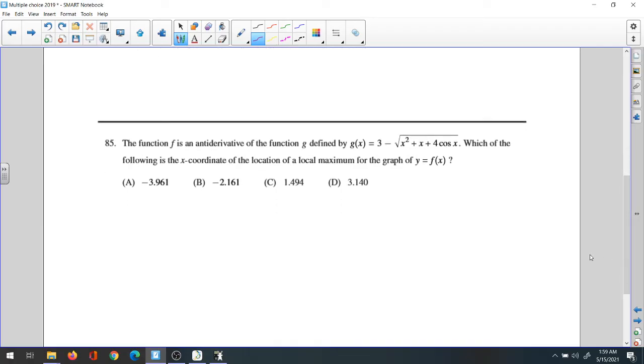Question 85: The function f is the derivative of function g. Function g is defined as g of x equals 3 minus the square root of x squared plus x plus 4 cosine x. Which of the following is the x coordinate of the location of a local maxima for the graph y equals f of x?